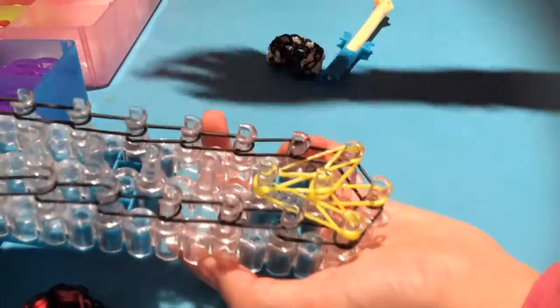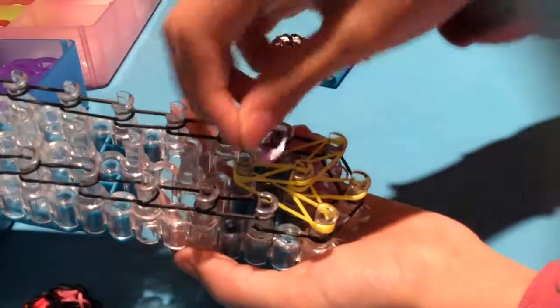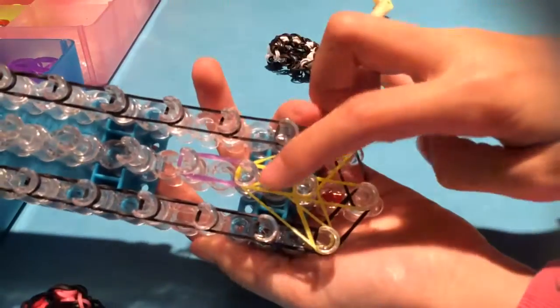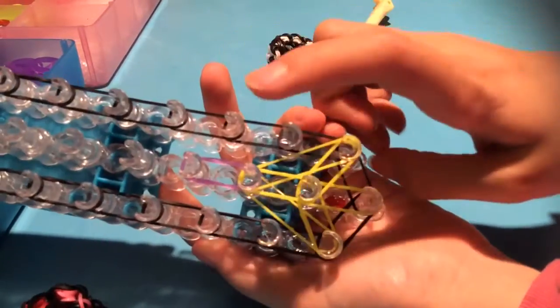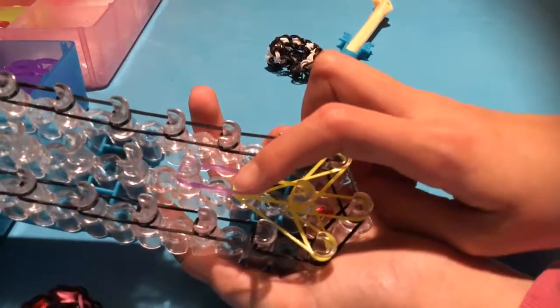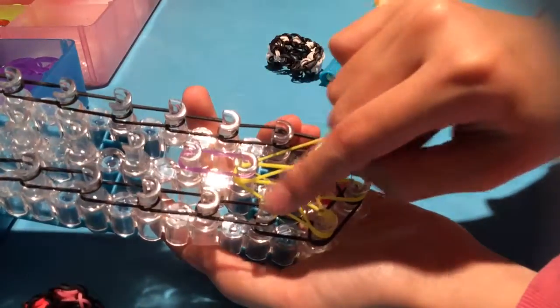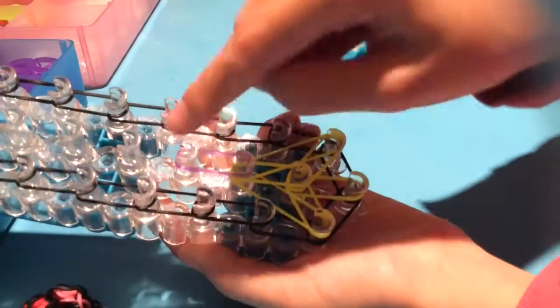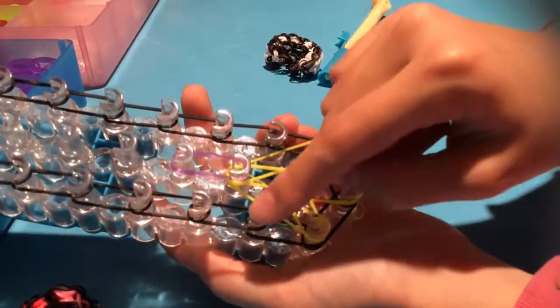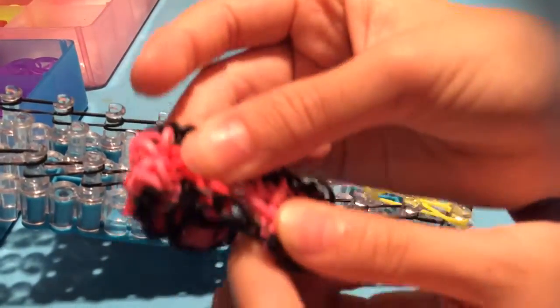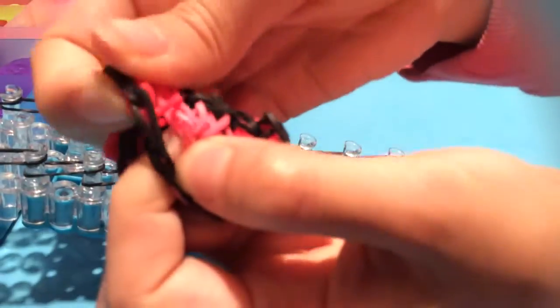Now you take your next color, which mine is purple. Place it on going forward from the point of the arrow you just did. Now you may have find that you skipped a peg.